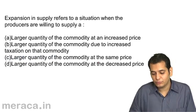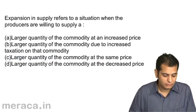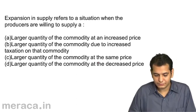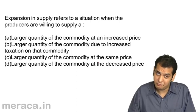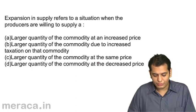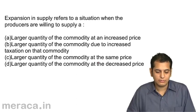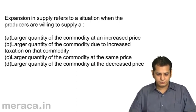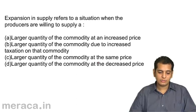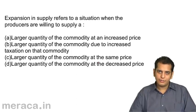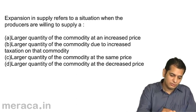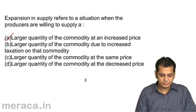Next question: expansion in supply refers to a situation when producers are willing to supply — A: a larger quantity at an increased price, B: a larger quantity due to increased taxation, C: a larger quantity at the same price, D: a larger quantity at a decreased price. Please remember, expansion means an increase in quantity supplied due to an increase in price. So the answer is A.